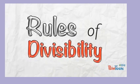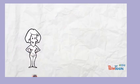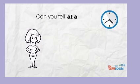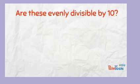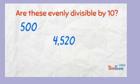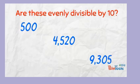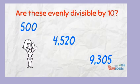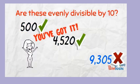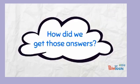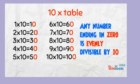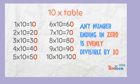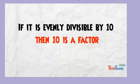Rules of divisibility. In the next 30 seconds, we will see if you know how to tell at a glance whether a number is divisible by 10. Are these numbers evenly divisible by 10: 500, 4520, 9305? If you think 500 and 4520 are evenly divisible by 10, you've got it! Think about the 10 times table — every product ends in a 0. Any number, no matter how large, if it ends in a 0 then it is evenly divisible by 10, and that means 10 is a factor.